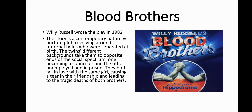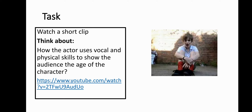Blood Brothers. Willie Russell wrote the play in 1982. The story is a contemporary nature versus nurture plot revolving around fraternal twins who were separated at birth. The twins' different backgrounds takes them to the opposite ends of the social spectrum — one becoming a counsellor and the other unemployed and in prison. They both fall in love with the same girl, causing a tear in their friendship and leading to the tragic deaths of both brothers. We're now going to watch a short clip. Think about how the actor uses vocal and physical skills to show the audience the age of the character.